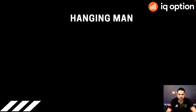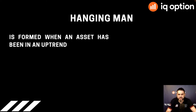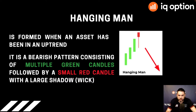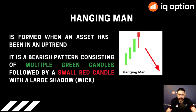Moving along to the hanging man — something not very pleasant that apparently also happens on our charts. This one forms when an asset has been in an uptrend. It is a bearish pattern consisting of multiple green candles followed by a small red candle with a large wick. If you see this, you can take a hopefully good trade at good timing and make some very nice profits.